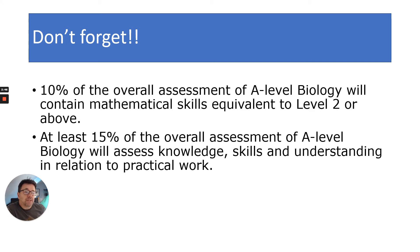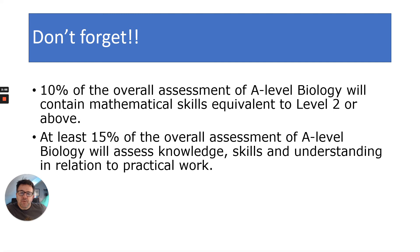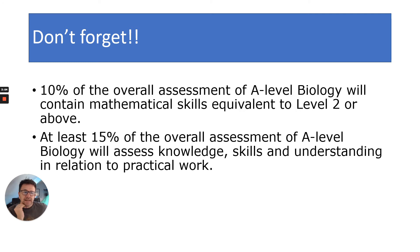10% of your overall assessment of A-level biology will contain mathematical skills equivalent to level 2 or above — that's like GCSE and above. That includes your understanding of standard deviation, being able to do indexes of biodiversity, and being able to analyse and interpret statistical information.